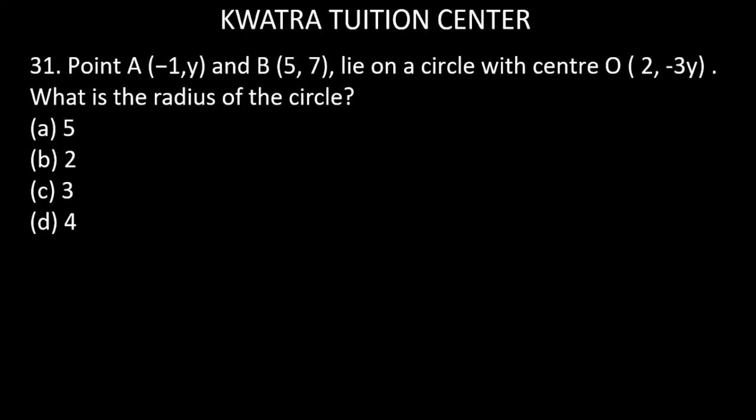Let's start with question number 31. It says point A is -1 comma y, B is 5 comma 7, lie on a circle with center O. What is the radius of the circle?